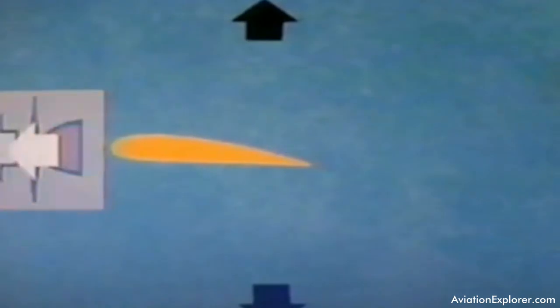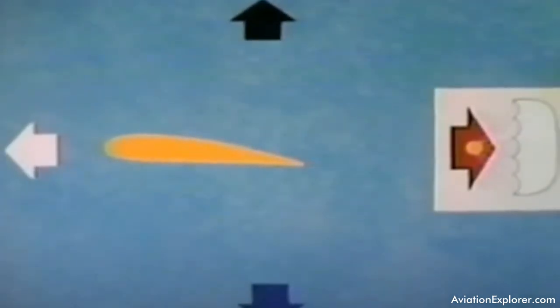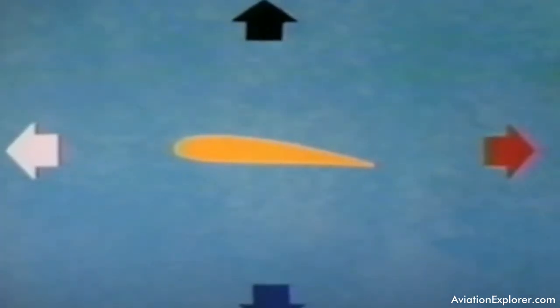Thrust is what moves the airfoil ahead and overcomes drag. When an airplane is flying straight and level and is not accelerating, these forces are in balance. Thrust equaling drag and lift equaling weight.